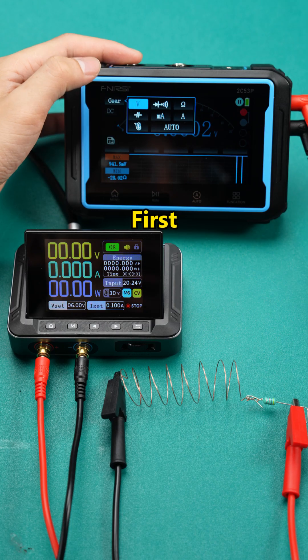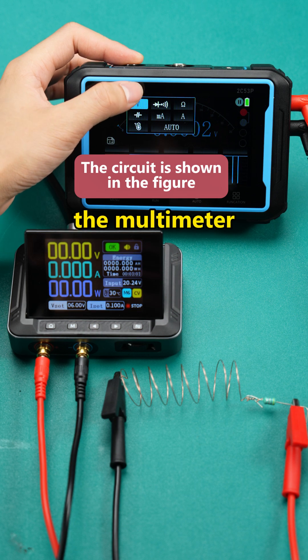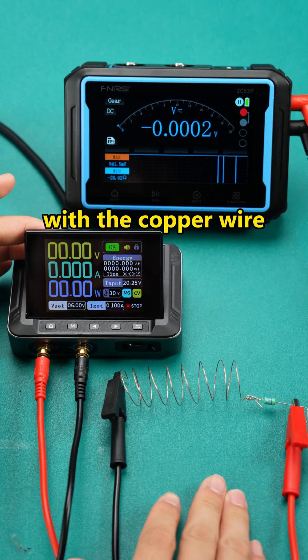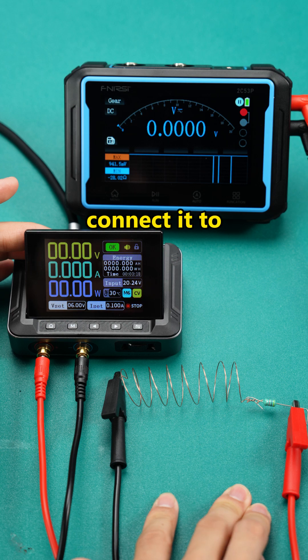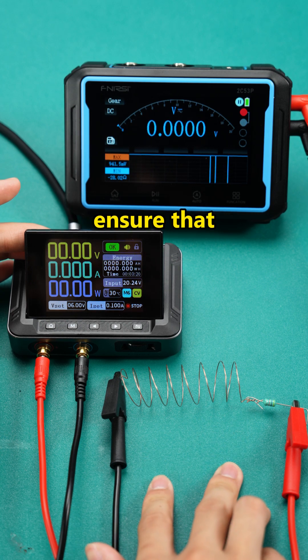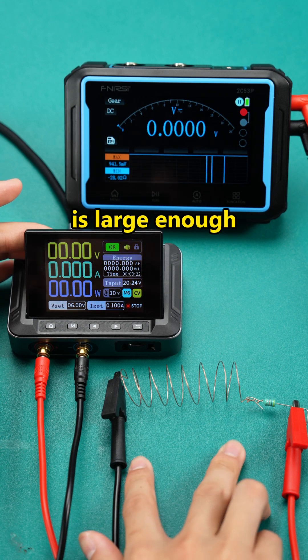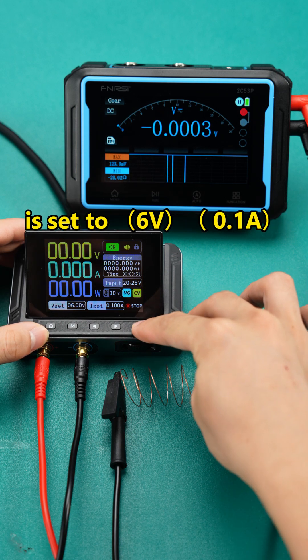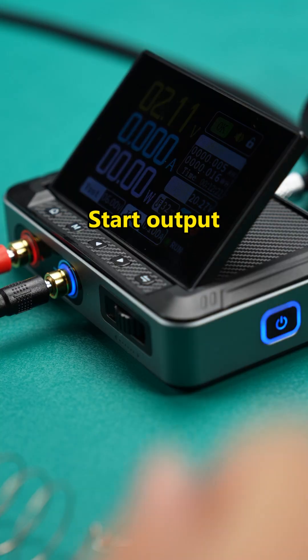So, follow me. First, select the voltage range of the multimeter, connect the resistor in series with the copper wire, and connect it to a voltage-stabilized power supply to ensure that the resistor power is large enough. The power supply output is set to 6 volts 0.1 A. Start output.